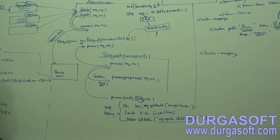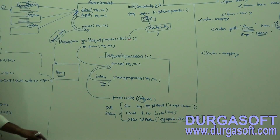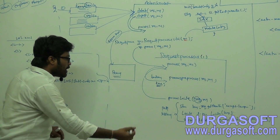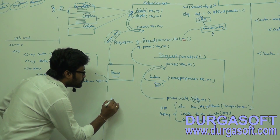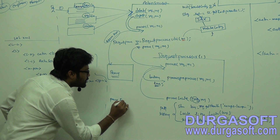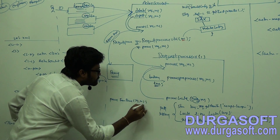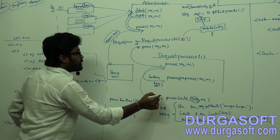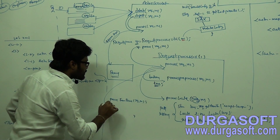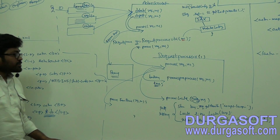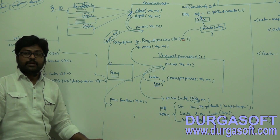After storing your language value, the process method will call one more method: processFormBean. The next step is it will call this processFormBean method.